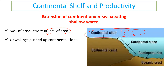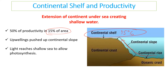The reason continental shelves are so rich in life is because of ocean currents. As we discussed in a previous video, ocean currents have upwellings. Nutrients are pushed up towards the continental shelf as they hit the continental slope, making it very rich. Also, light from the sun can reach the continental shelf, so plants and algae can do photosynthesis, resulting in a high level of productivity.